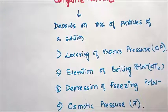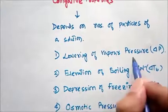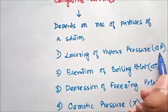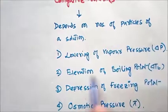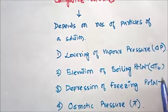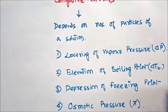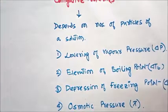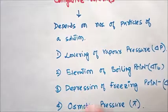The four colligative properties are: lowering of vapor pressure, denoted by ΔP; elevation of boiling point of a solution, denoted by ΔTb; depression of freezing point of the solution, denoted by ΔTf; and osmotic pressure. We will go through these one by one.